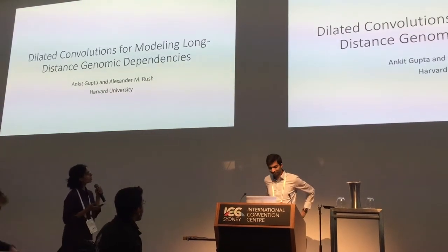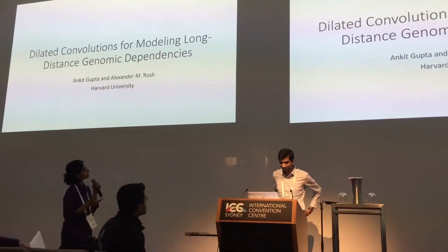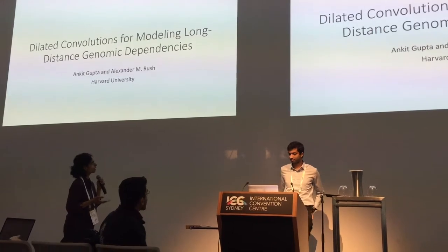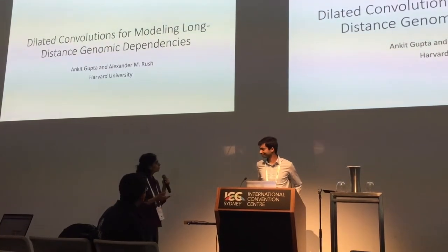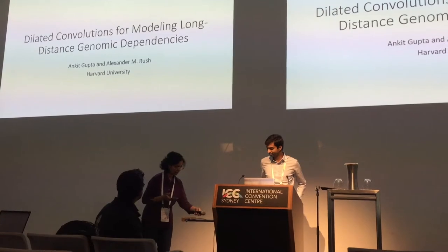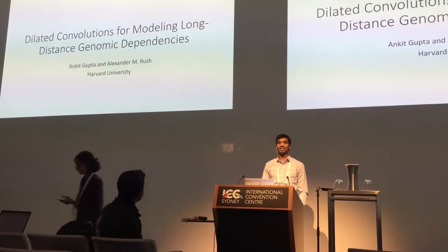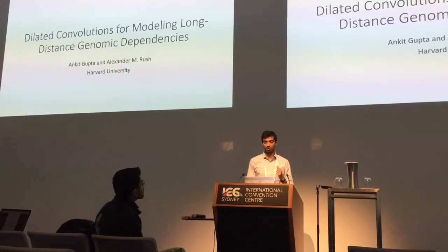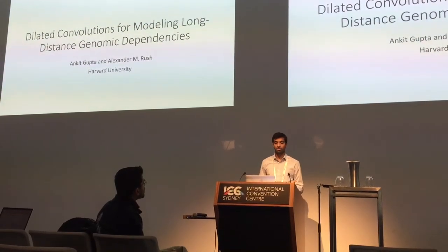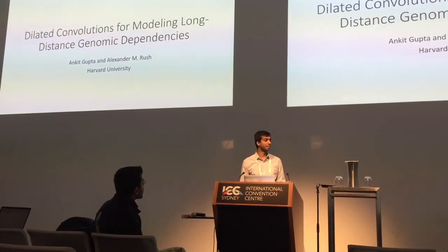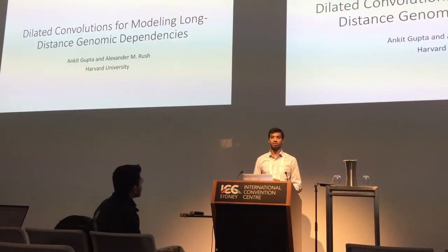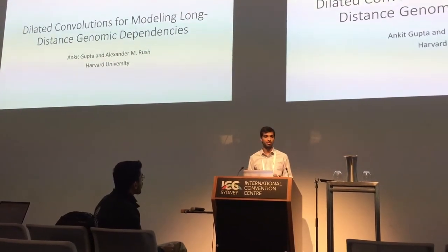Next we have Amgit Gupta from Harvard, who is going to discuss another neural network architecture for translational practical partners. Hi everyone, I'm Amgit from Harvard. I'm going to be talking about using dilated convolutions for modeling long-distance genomic dependencies, and predicting genetic markers in general.